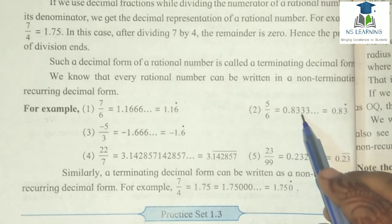We know that every rational number can be written in a non-terminating recurring decimal form. Let's see the examples of a rational number where after division it gives us a non-terminating recurring decimal form — for example, 7 by 6.